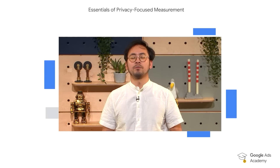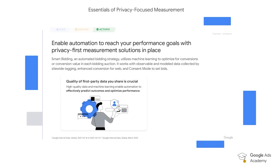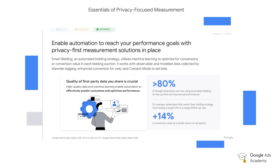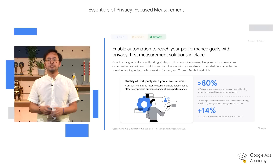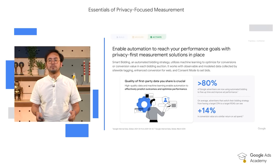Now, let's talk about performance. Once you have your privacy-centric measurement solutions in place, don't forget to enable automation as well to maximize performance. Smart bidding leverages machine learning to optimize towards conversion or conversion value, always trying to get you to the users most likely to convert. Today, 80% of Google advertisers use smart bidding for cost efficiency and saving themselves time. Automation can only work as well as you feed it with great data.